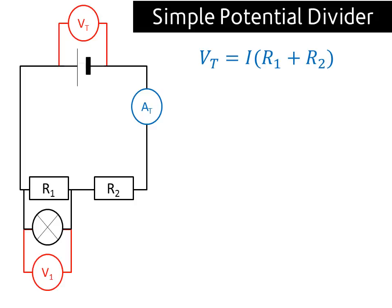Now the formula for that is this: the terminal voltage we know is the total current times by the total resistance, and we know that's R1 plus R2 in a series of resistors.